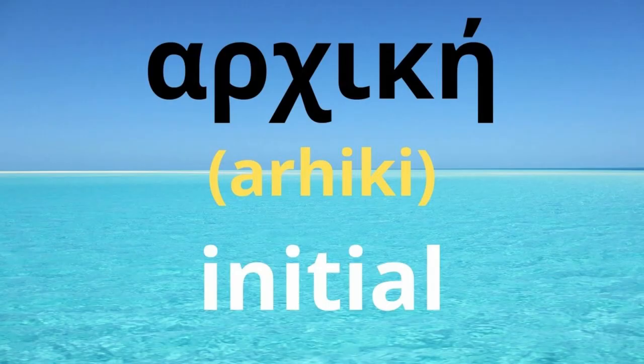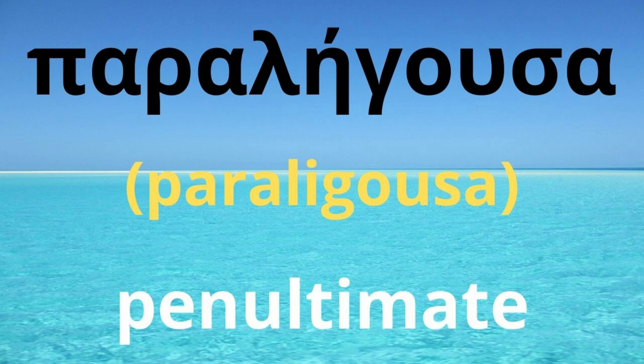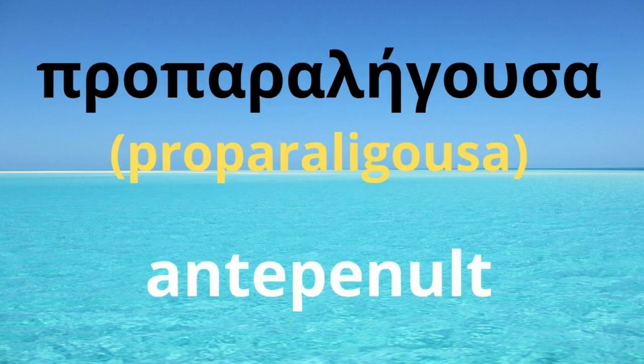You have to know that the syllables of a word have names. The first syllable is called ARCHIKI, meaning 'initial.' The last syllable is called LIGUSA — it is the ending of the word. The second from the end is called PARALÍGUSA, meaning 'penultimate.' The third syllable from the end is called PROPARALÍGUSA.